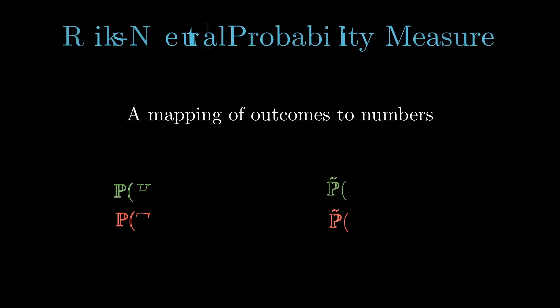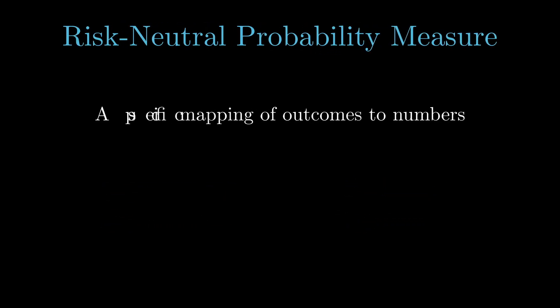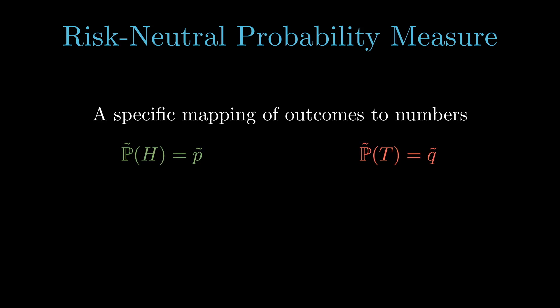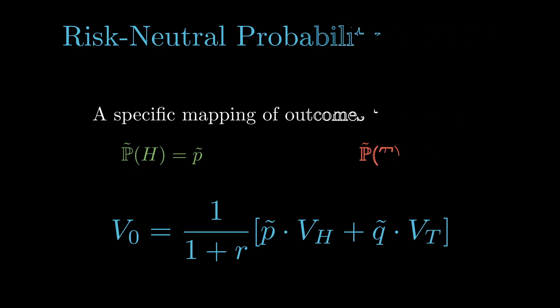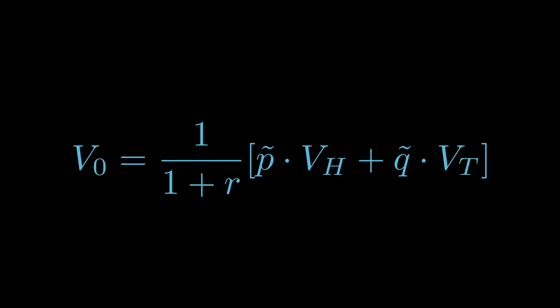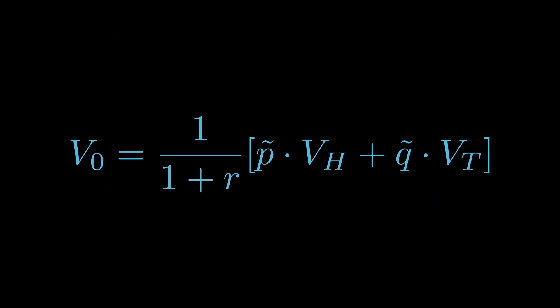Now we introduce the idea of risk-neutral probability measures. They're basically a very specific mapping of outcomes. We basically have to map heads and tails to specific numbers, such that for every single asset, it satisfies this formula that we see here.